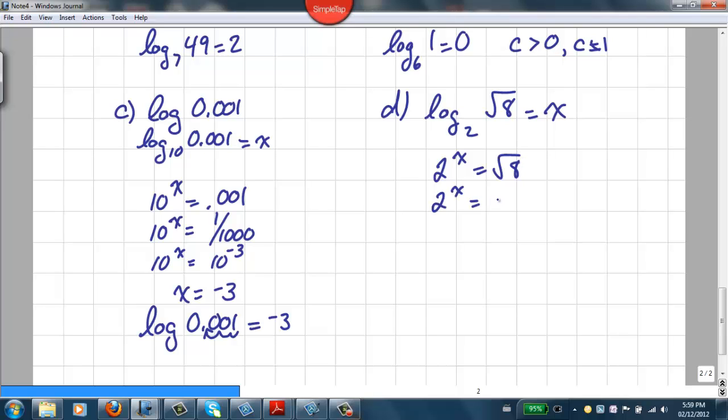Or, 2 to the x is equal to 2 cubed to the 1 half. 2 cubed being the 8, and the 1 half being the square root, the second root of 8. If we apply our exponent laws, we get 2 to the 3 halves, so x must be equal to 3 halves, or 3 over 2. That means then, that log base 2 of the square root of 8 is equal to 3 over 2.